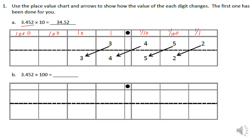On the right side of the decimal we have the tenths, the hundredths, and the thousandths. They've taken 3 and 452 thousandths and placed it into the place value chart. We're multiplying by ten — if you take 4 times 10 you get 40. The whole basis of this lesson is to show that each place value to the left is ten times more than the place value to the right.